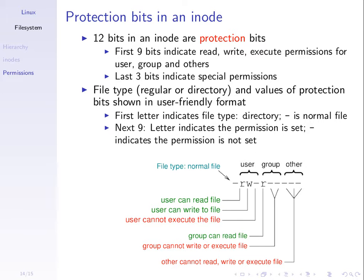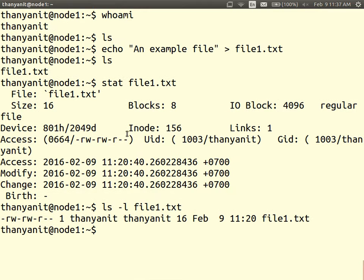This summarizes how we interpret the permissions. Even though there are 12 bits, in Linux we commonly use the ls command to see the values of nine of those bits: whether the user can read, write, or execute; whether the group can read, write, or execute; and whether others can read, write, or execute. In this example, the user can read and write, the group can read, and they cannot do other things. Let's go back to our system and see some simple examples.